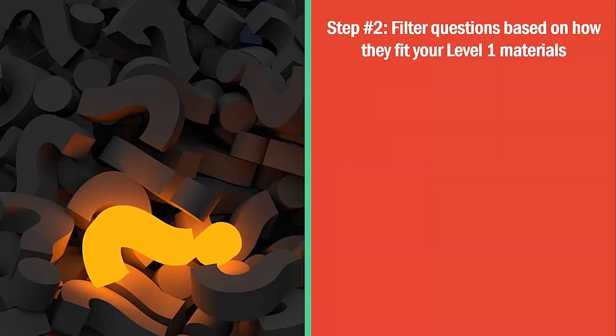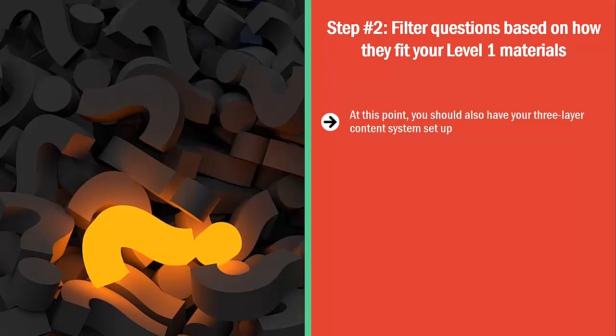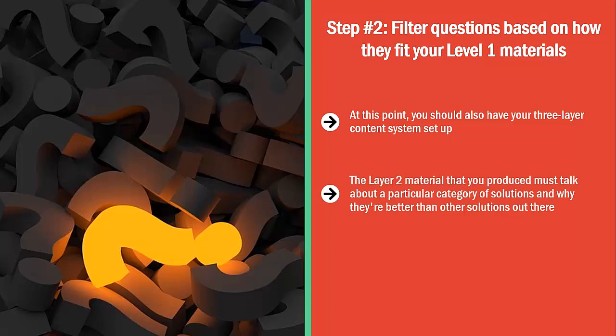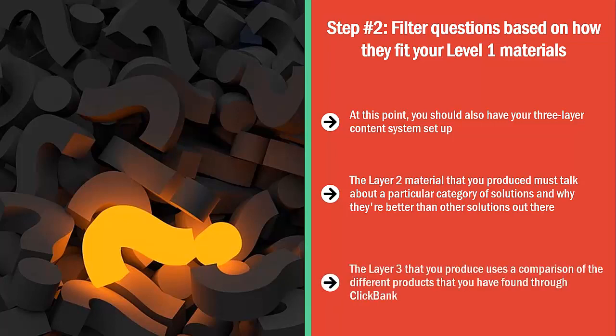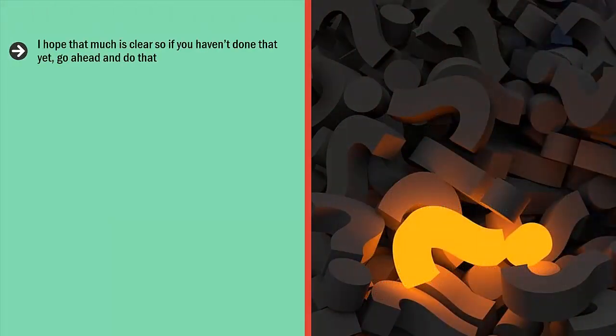Step number two: filter questions based on how they fit your level one materials. At this point, you should also have your three-layer content system set up. The first layer is a blog post that informs the reader regarding the problems they have and the range of solutions, as well as a common-sense guide on what to do and what not to do. Layer two must talk about a particular category of solutions and why they're better than other solutions out there. Layer three uses a comparison of the different products that you have found through ClickBank. The key is that your content must answer key questions that your audience members would have in mind when looking for solutions.